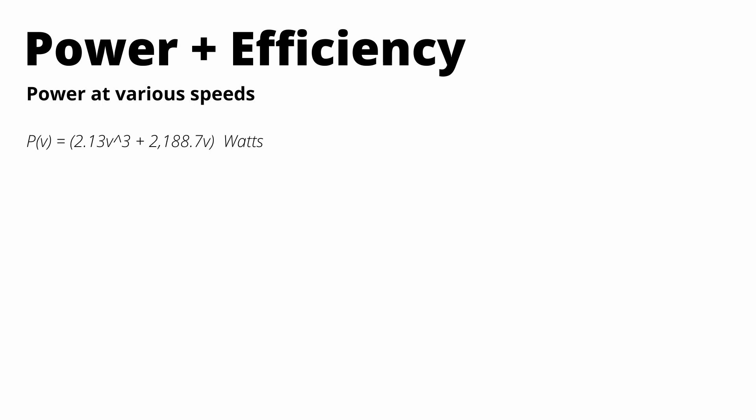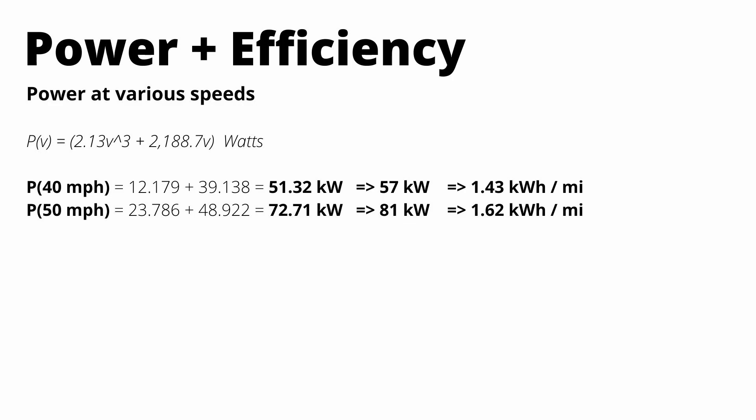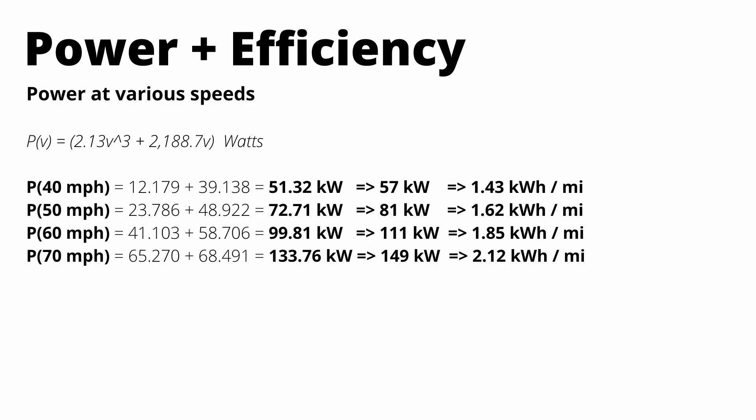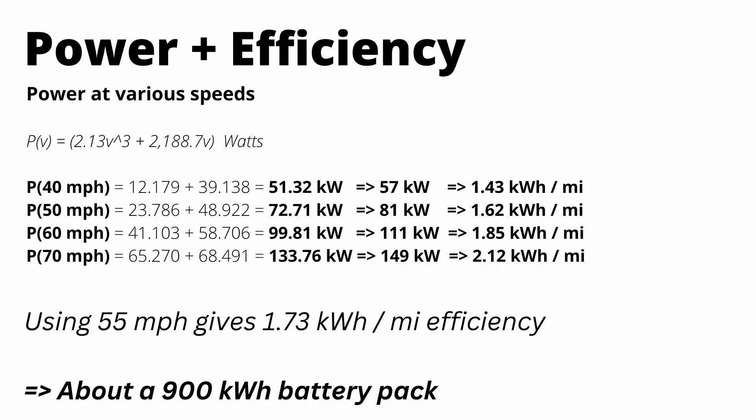To illustrate that, I've calculated efficiencies using our equation at various speeds. At 40 miles an hour, our efficiency is about 1.4 kilowatt hours per mile. At 50 miles an hour, 1.6. At 60 miles an hour, 1.85. And at 70 miles an hour, it goes above 2. So using that 55 mile an hour assumption, this truck has roughly a 900 kilowatt hour battery pack.